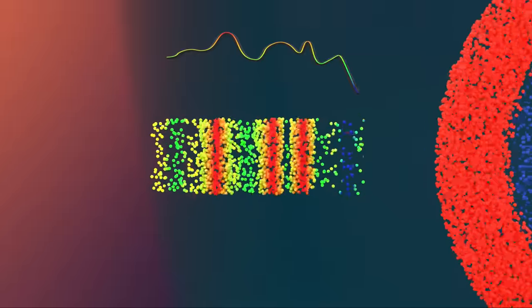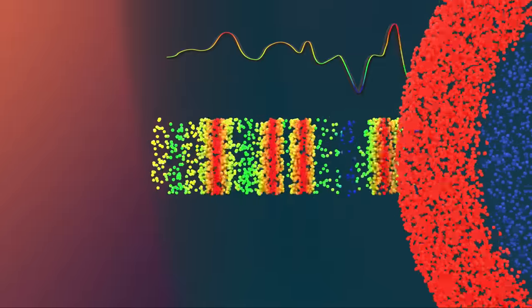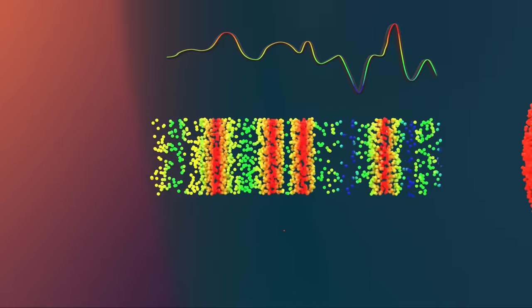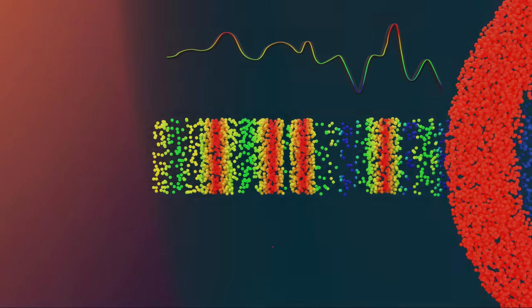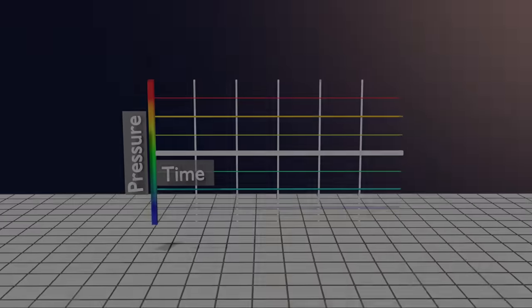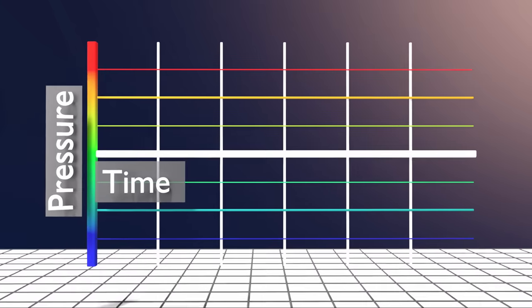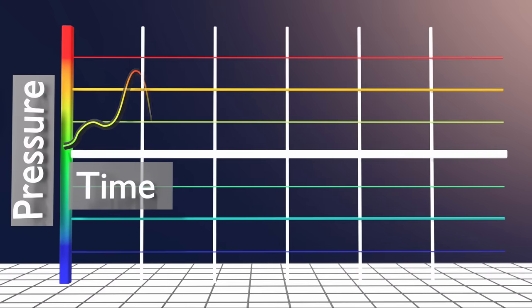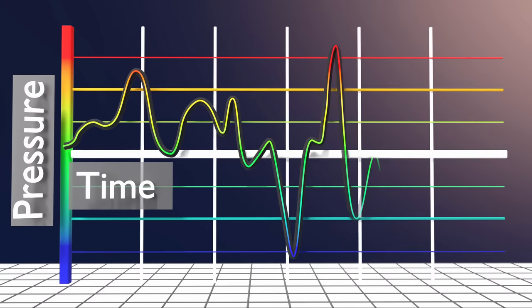This cycle repeats itself, and each time it does, it generates a high pressure and low pressure wave, which can be graphed. This graph shows the pressure waves, or waveform, produced by popping a balloon.